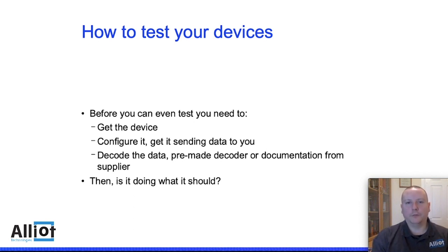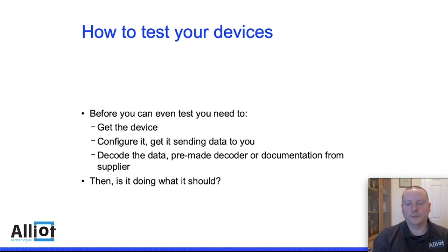Once you've identified what devices you want and identified a couple of suppliers, then you need to test it. First you've got to get the device — you usually end up having to buy it. Then you've got to configure it, getting it sending data to say The Things Network. Then you've got to decode that data, because the LoRaWAN sensor will be sending data in hexadecimal bytes and you've got to translate that into temperature or humidity or whatever it is. Fortunately, a lot of manufacturers now have pre-made decoders written in JavaScript or another language that you can use straight away, or at least documentation to allow you to make your own. We at AllIoT also have lots of decoders that we can give to people to use for testing devices.